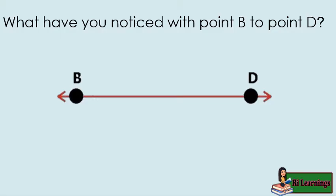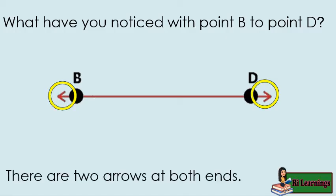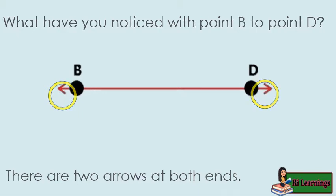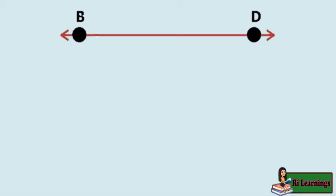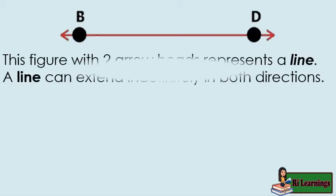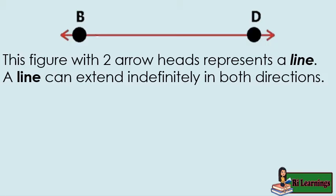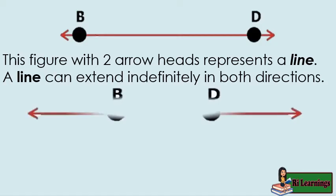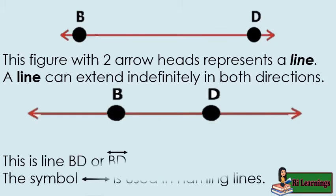What have you noticed with point B to point D? There are two arrows at both ends. This figure with two arrowheads represents a line. A line can extend indefinitely in both directions. This is line BD, or capital BD with a line symbol on top. This symbol is used in naming lines.